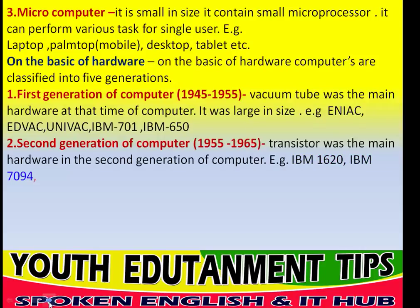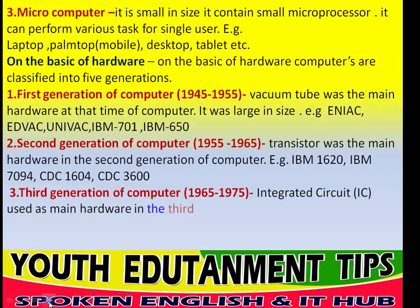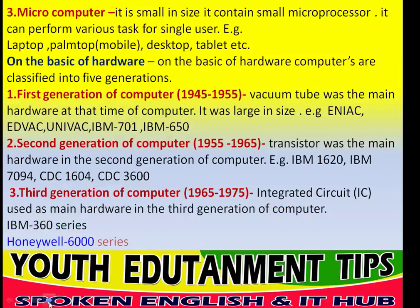The period of second generation computer is 1955 to 1965. The transistor was used as the main hardware in the second generation of computer. Examples of second generation computers are IBM 1620, IBM 7094, CDC 1604, and CDC 3600.